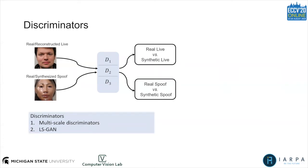For each discriminator, it will output two maps, where the first map is trying to distinguish between the real live face versus the reconstructed live face, and the second map will try to distinguish between the real spoof versus the synthesized spoof. Each discriminator follows the design of PatchGAN, which is essentially a fully convolutional network.